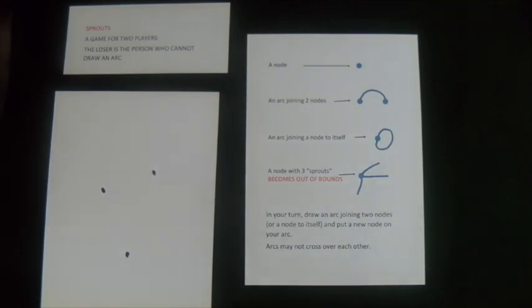In your turn, draw a line between any two nodes, we call this an arc, or an arc can join a node to itself. When you've drawn the arc, put a node on it.